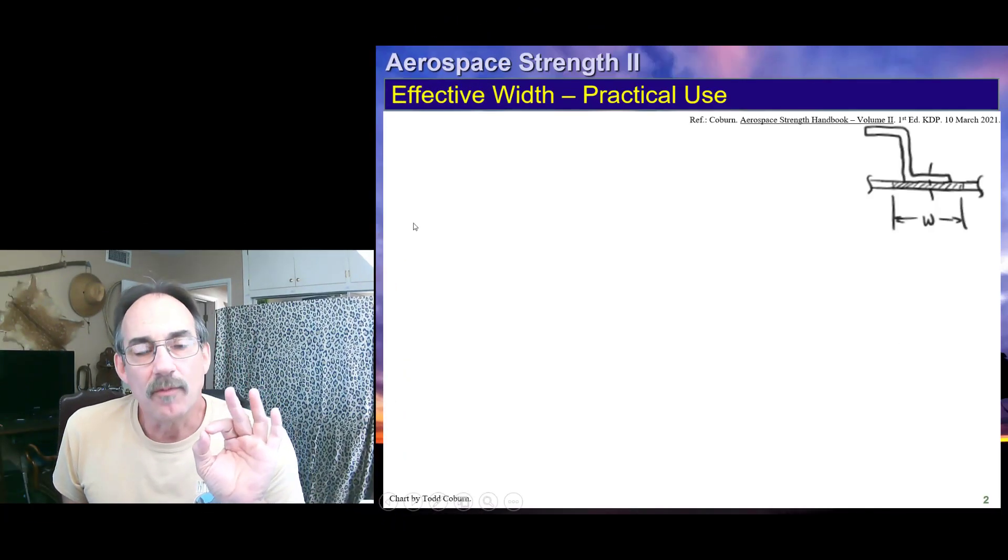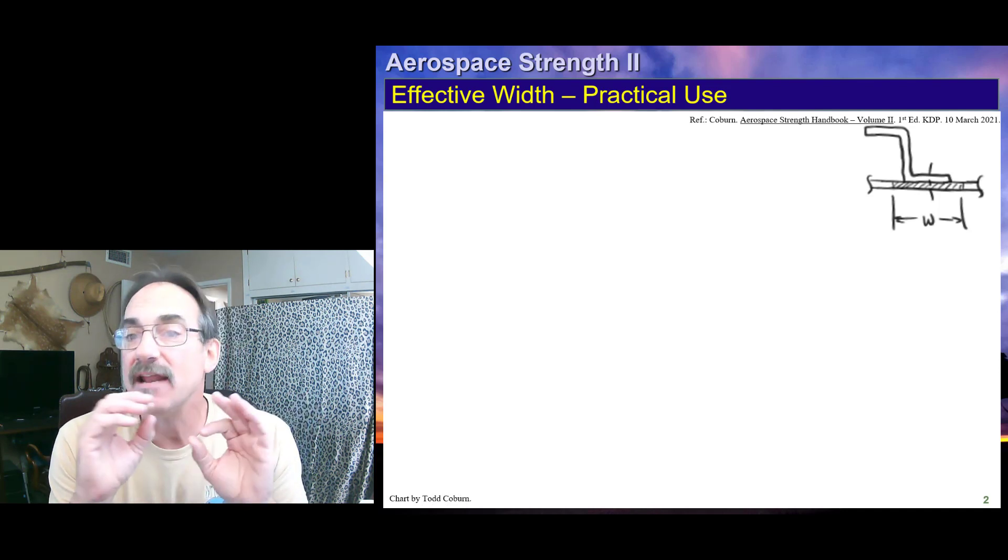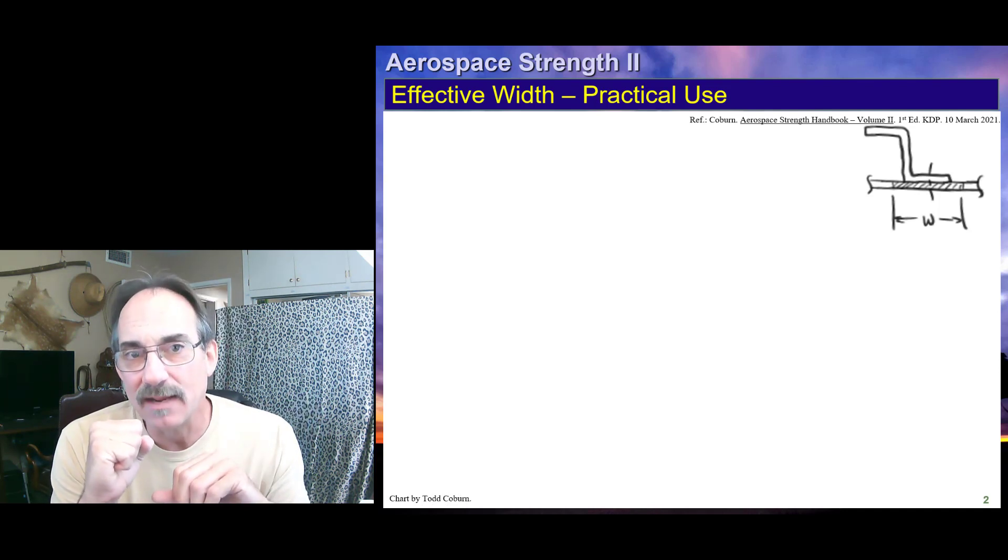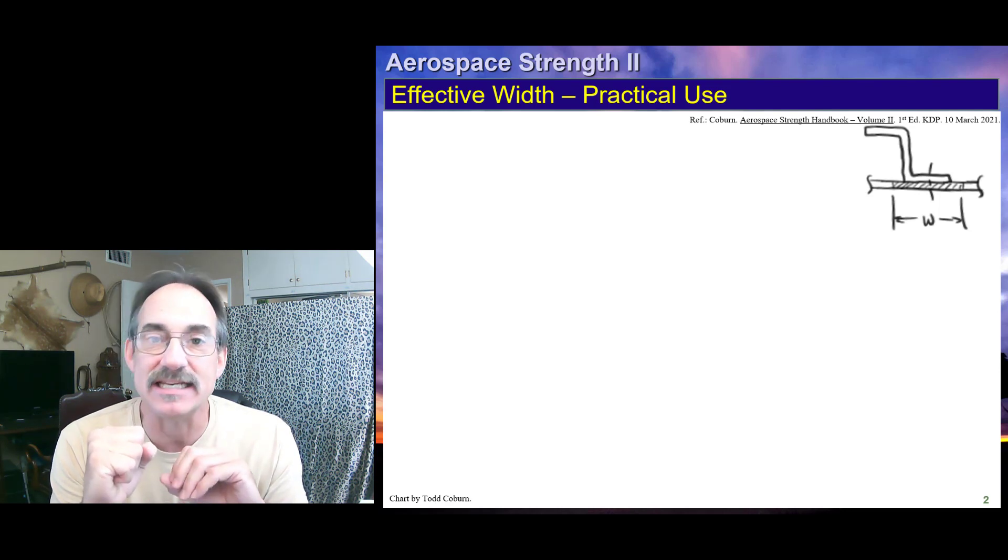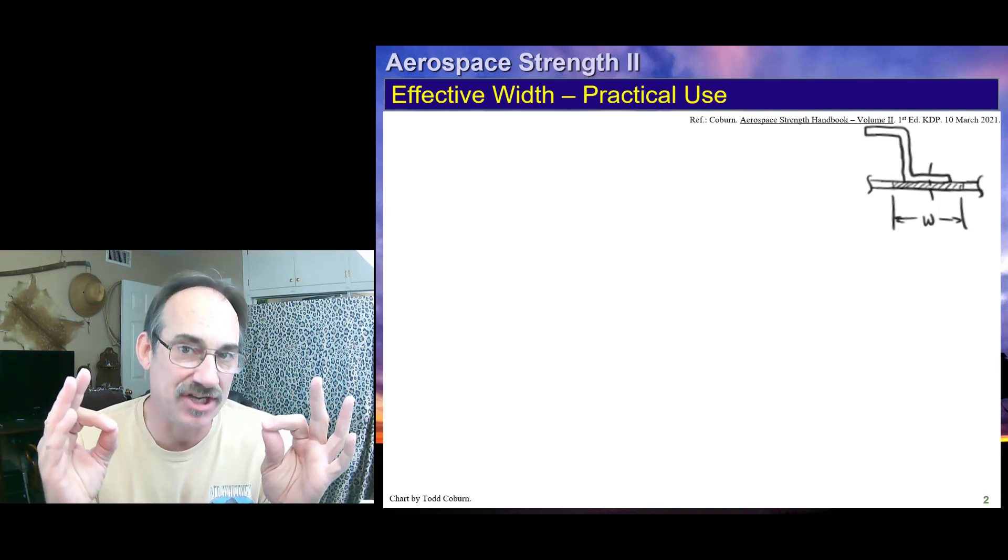So we saw for effective width, we're talking about a fastener. The fastener may be shown, it may be shown by its centerline like this. What we're talking about is any kind of stringer-like material or cross-section or any cross-section that is attached to another member.